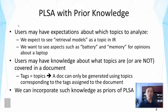A user may also have knowledge about topic coverage — we may know which topic is definitely covered or not covered in a document. For example, we might have topical tags assigned to documents, and those tags could be treated as topics. If we do that, then a document can only be generated using topics corresponding to the tags already assigned to it. If a document is not assigned a tag, there's no way to use that topic to generate the document.